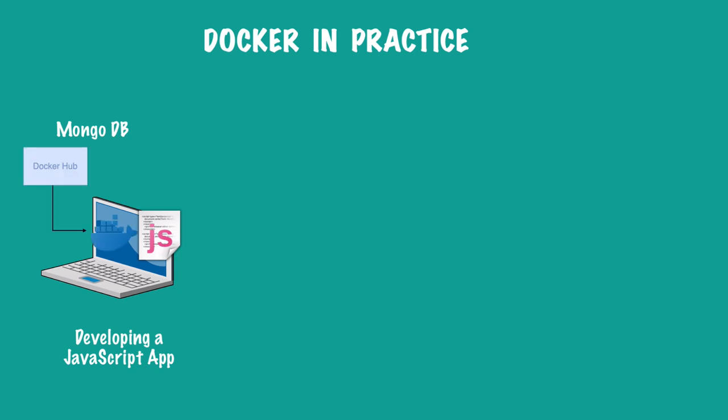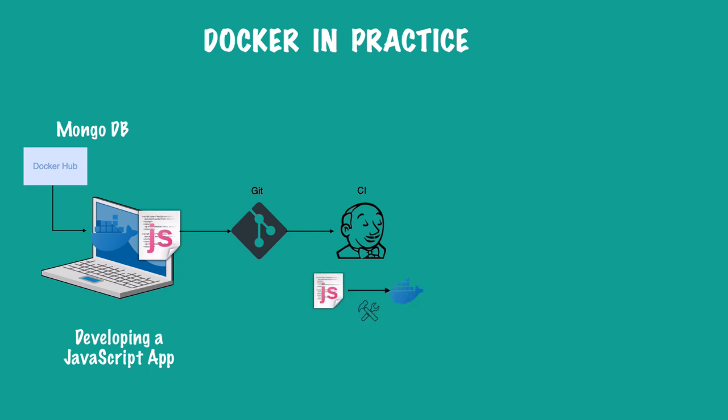You connect your JavaScript application with MongoDB and start developing. Once you've developed the first version of the application locally and want to deploy it to the development environment for a tester to test, you commit your JavaScript application to Git or some other version control system. That triggers a continuous integration Jenkins build, which produces artifacts from your application — first building the JavaScript application and then creating a Docker image from that artifact.